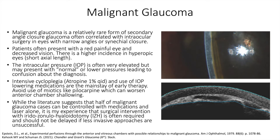The opposite eye central anterior chamber is typically deep, and this is one clue to distinguish malignant glaucoma from acute primary angle closure, where the anterior chambers of both eyes are more symmetric. Optically clear aqueous zones have been described in the vitreous cavity, although I have not seen this in my experience.